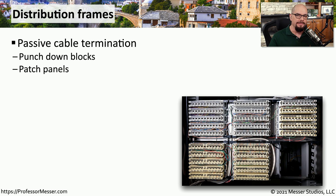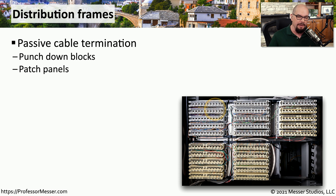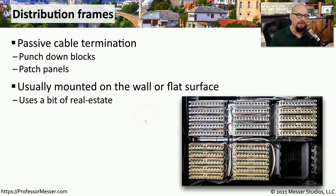If you look at the back wall of a data center, you may notice a huge wall of wires and punchdown blocks. This is a distribution frame, and it's a way to terminate all of the wires and cables coming into a room to make it much easier to manage as you're connecting to other devices. This is usually a set of punchdown blocks or patch panels, and it usually includes a number of wires and cables for patching from one device to another.